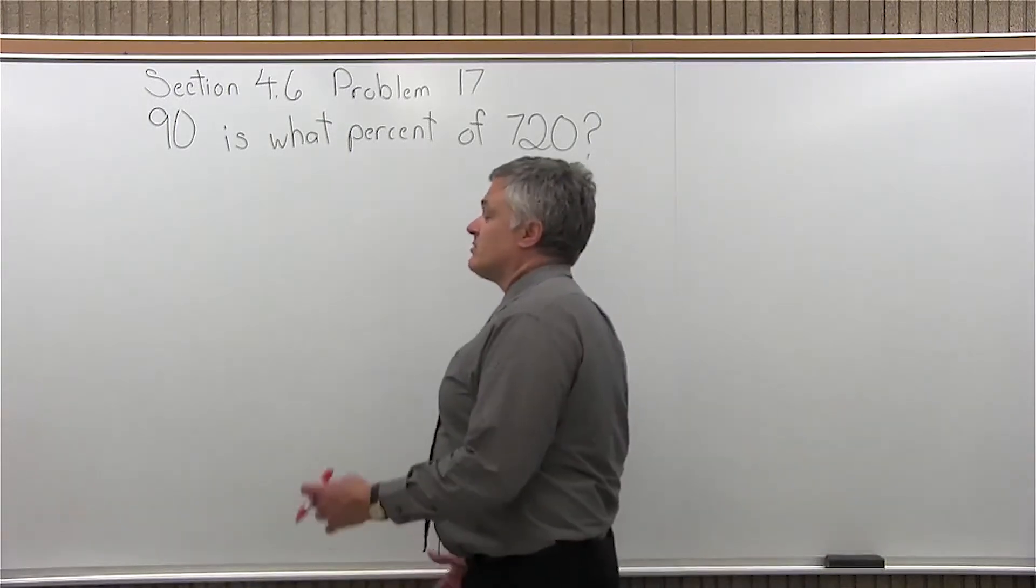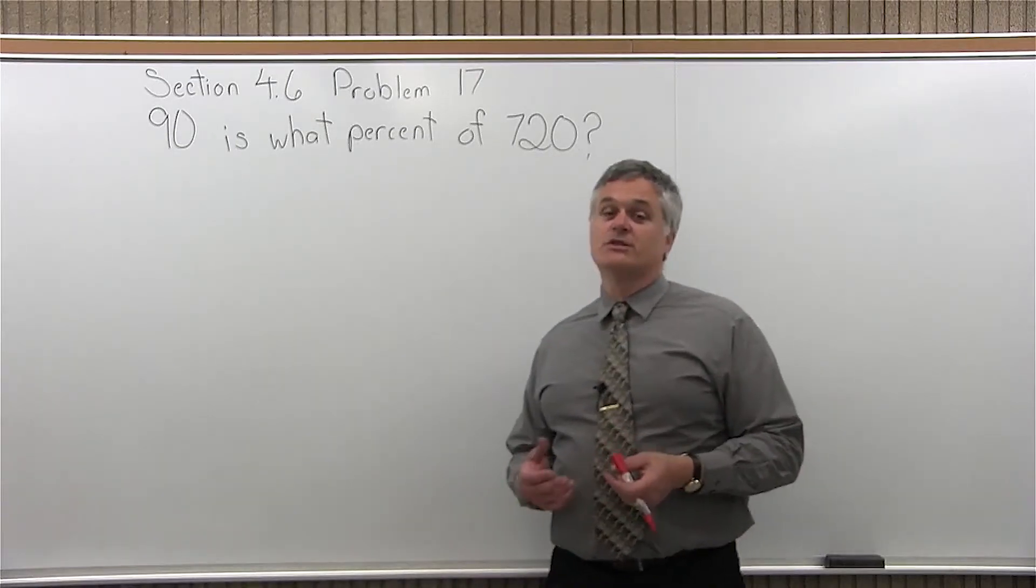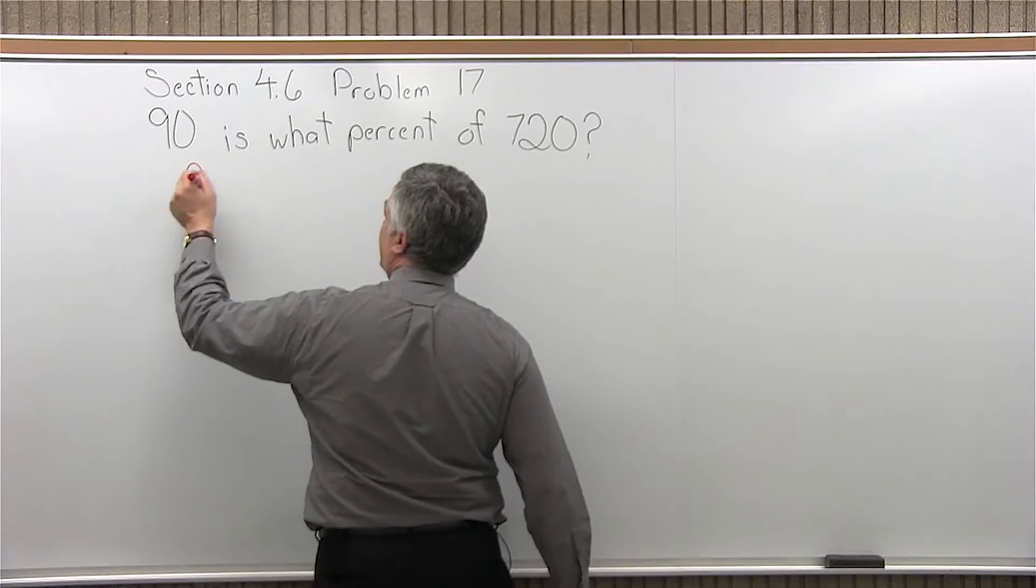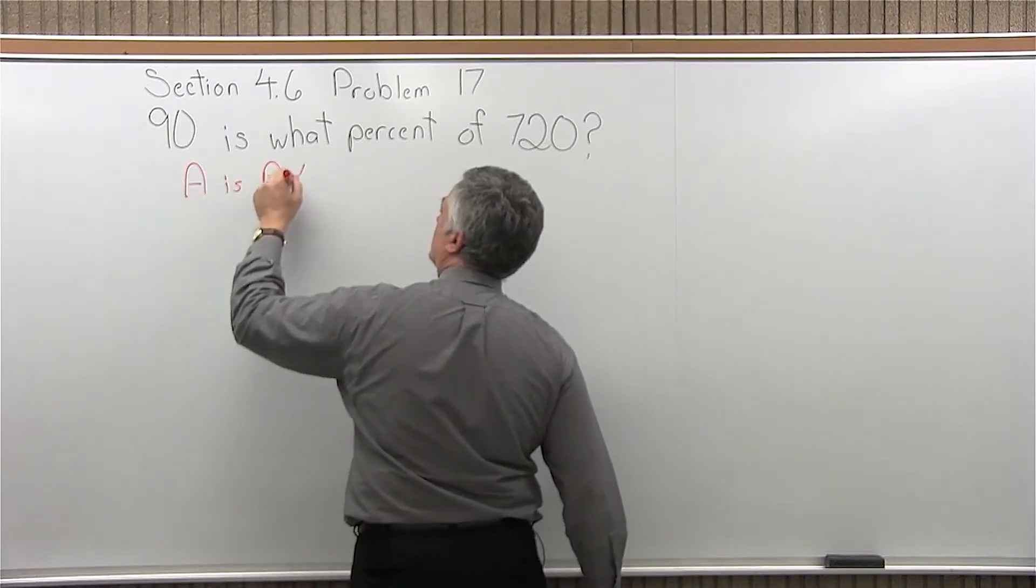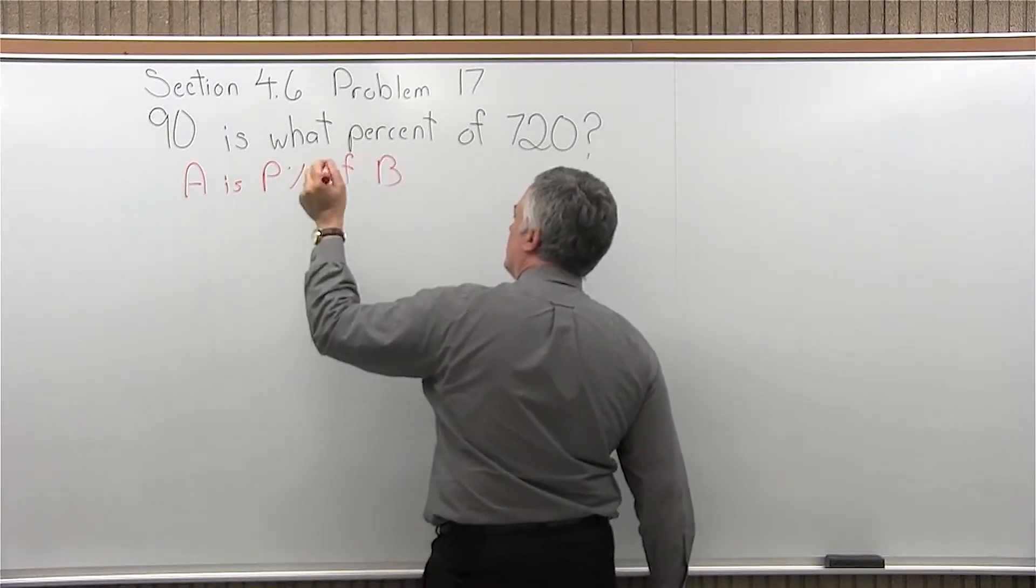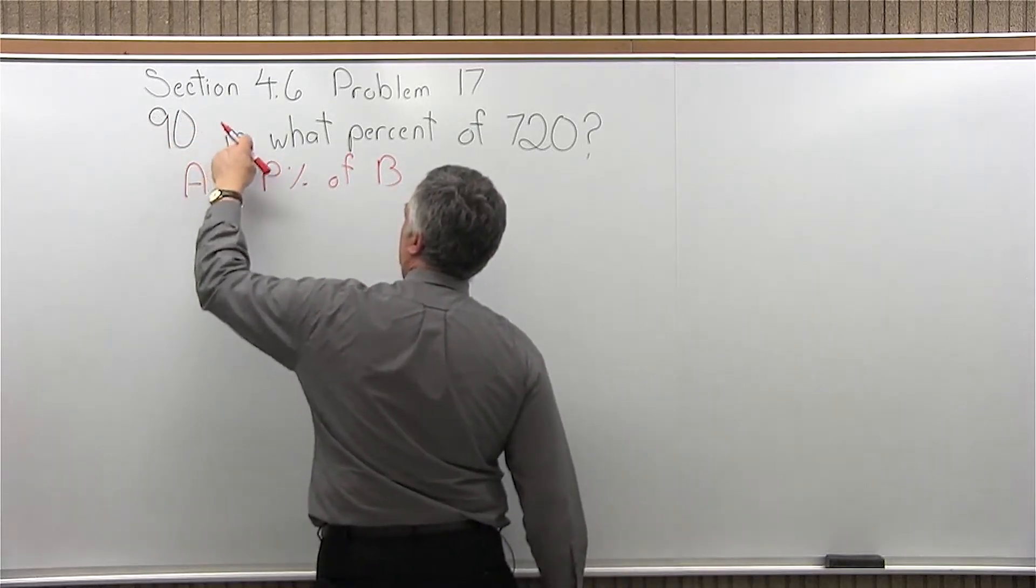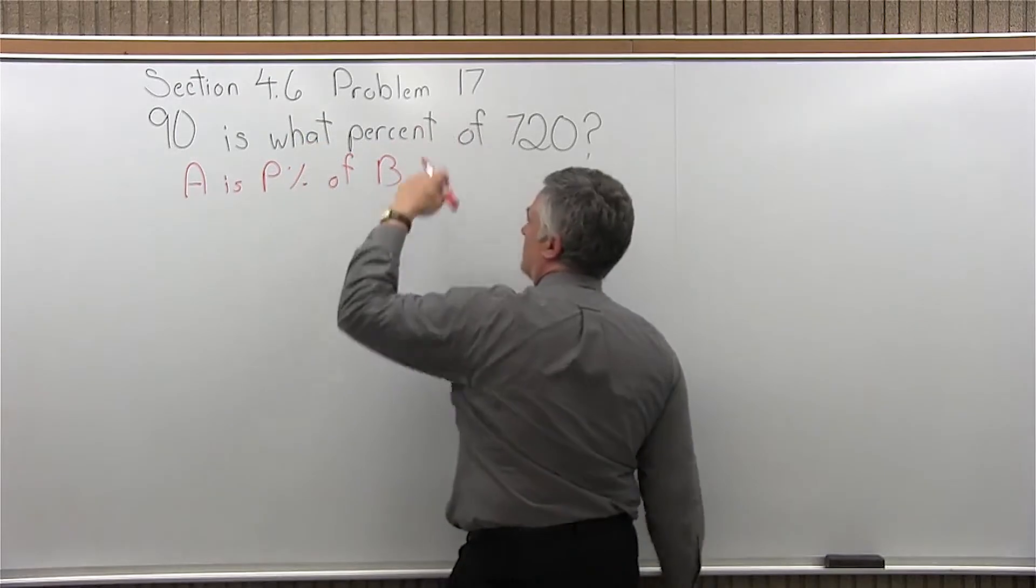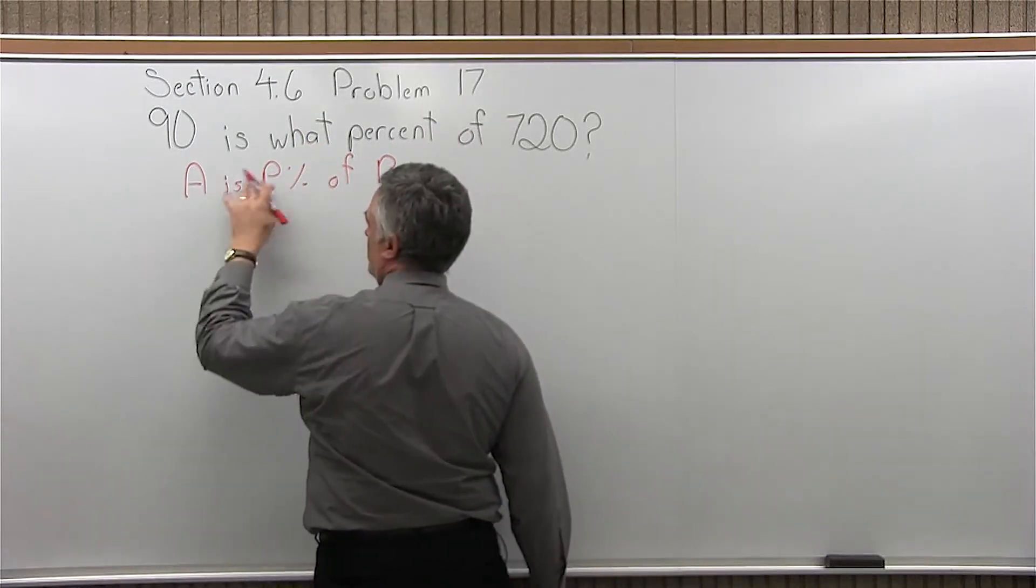So to solve a problem like this, what we want to do is set it up as a proportion, and to use the proportion, we want the problem in the form A is P percent of B. And we do have that. A is P unknown percent of B, some other number. So we have the form that we want.